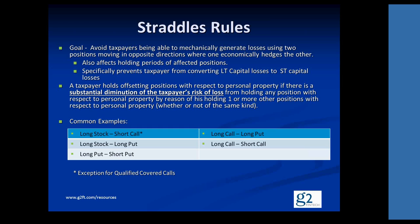Like any of these other rules, if you do something that looks like a straddle, you cannot take those losses. It's not a question of disallowing them permanently — it's a question of shifting the losses. The rule also affects the holding periods of the positions involved in the straddle, so that it not only prevents tax loss harvesting but also prevents mechanically converting long-term capital losses into short-term capital losses.